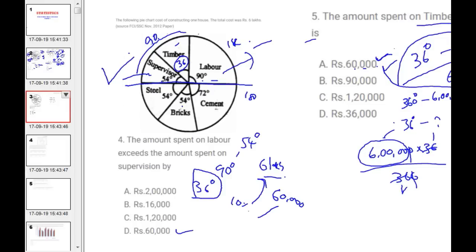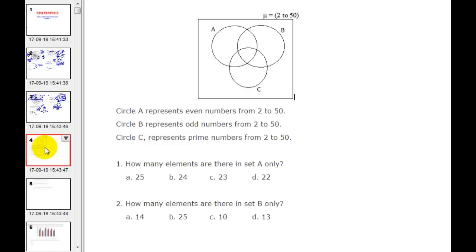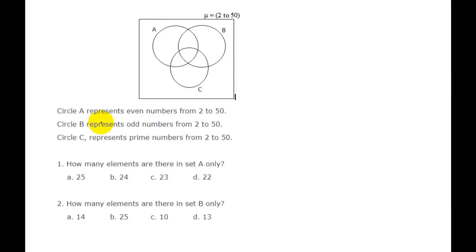This was the pie chart section. Next is the Venn diagram. When we talk about sets and Venn diagrams, we have circles A, B, and C representing different sets.